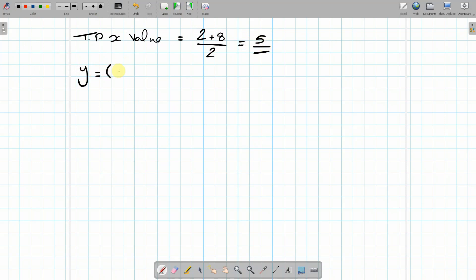So it's (x minus 8)(2 minus x). So if we substitute in x as 5, let's see what happens. So (5 minus 8)(2 minus 5).